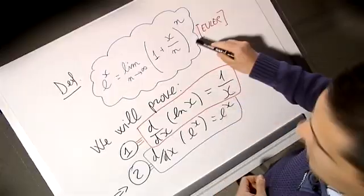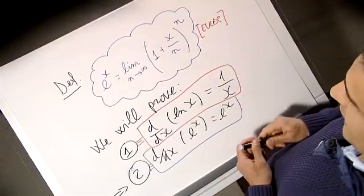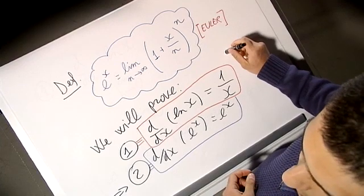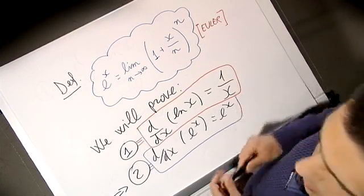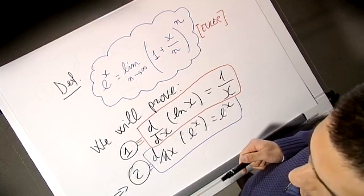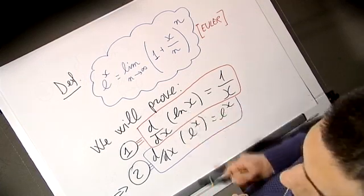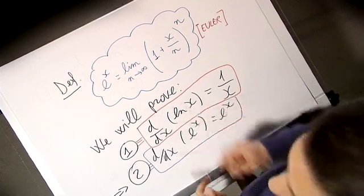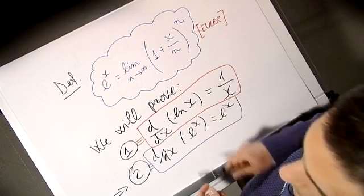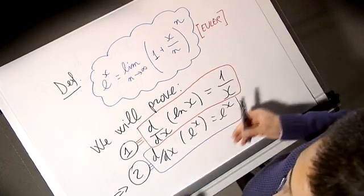So we will use this definition, and then we will use the fact that the natural log is the inverse of the exponential function. We will divide our proof into two steps. The first step: we're going to prove that the derivative of the log is 1/x. In the second step, we will use this fact to prove that the derivative of e^x is then just e^x.